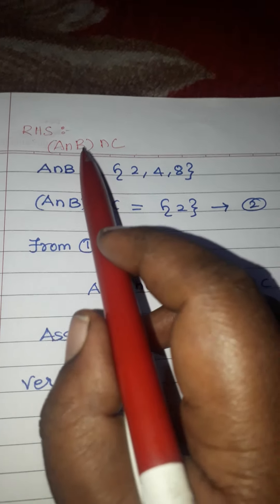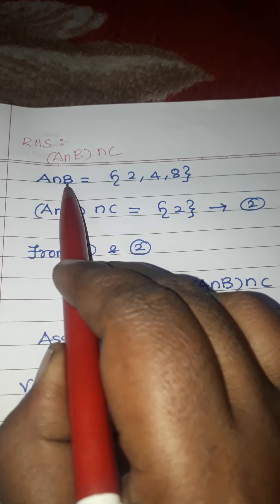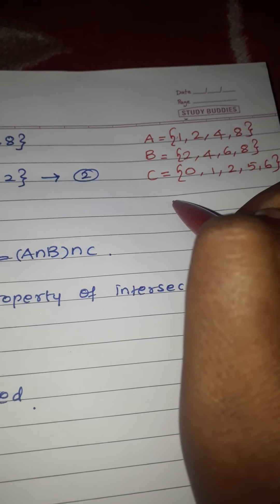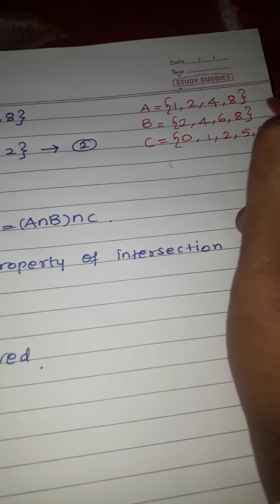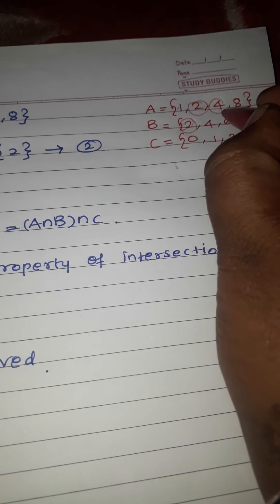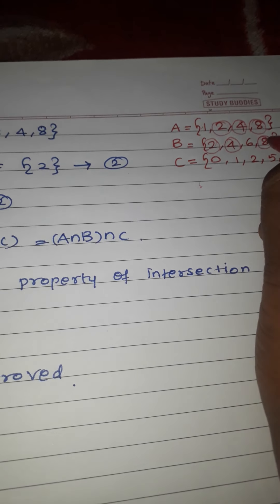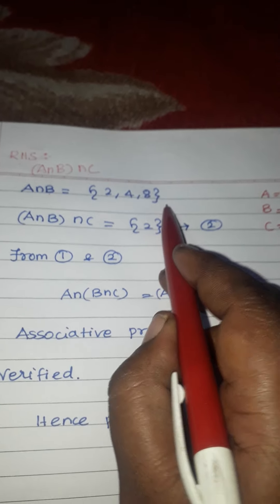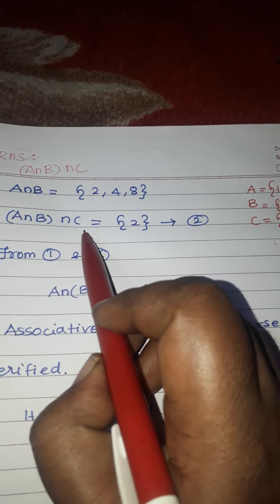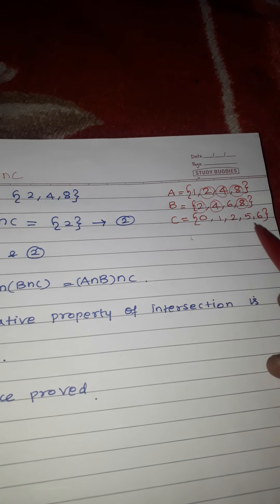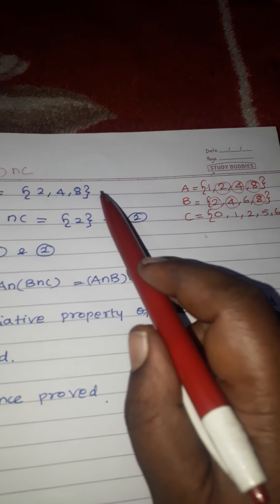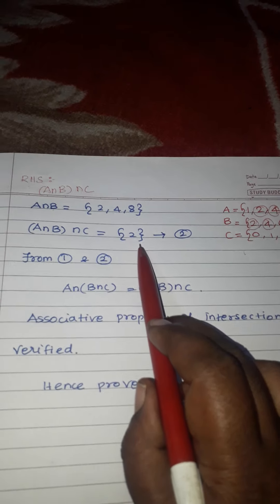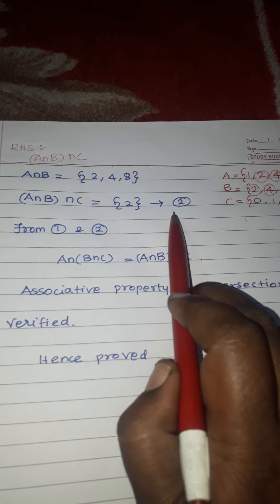Next, find the RHS: (A∩B)∩C. First find A∩B: common elements between A={1,2,4,8} and B={2,4,6,8} are 2, 4, and 8. So A∩B = {2, 4, 8}. Now (A∩B)∩C: common between {2,4,8} and C={0,1,2,5,6} is only 2. So (A∩B)∩C = {2}. This is equation 2.